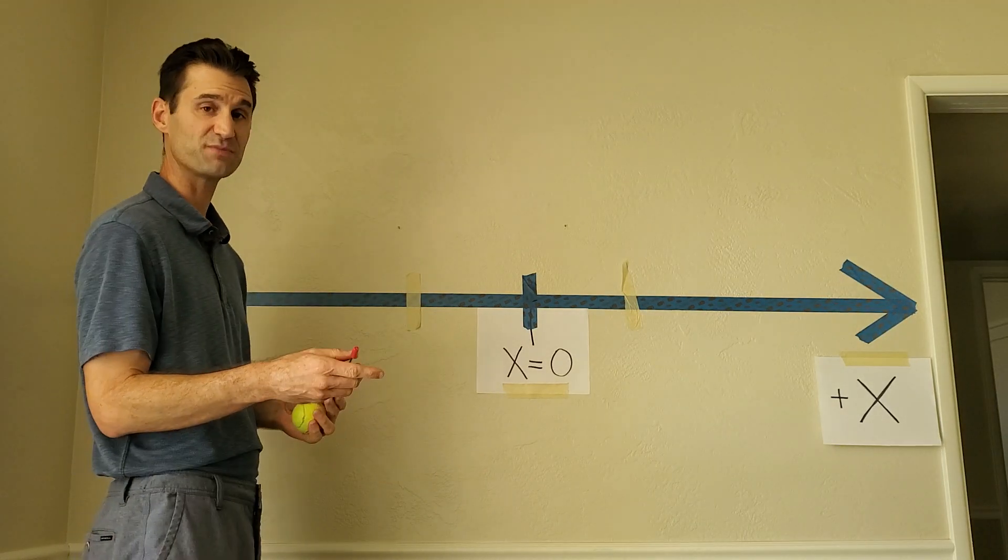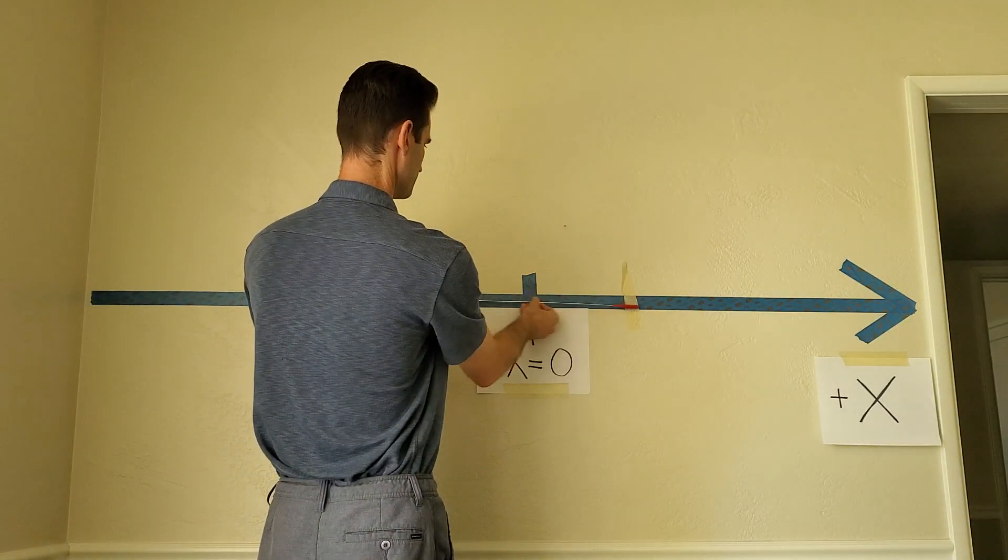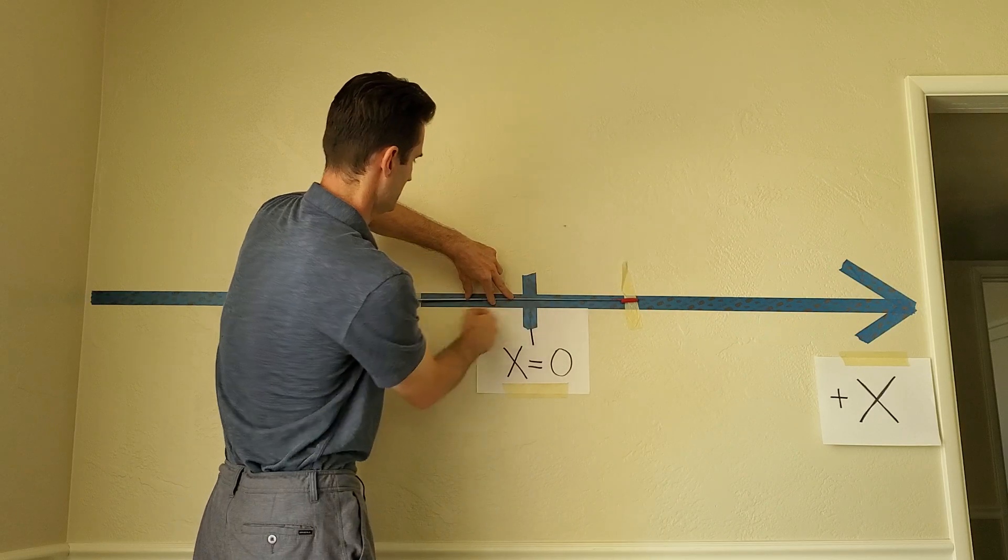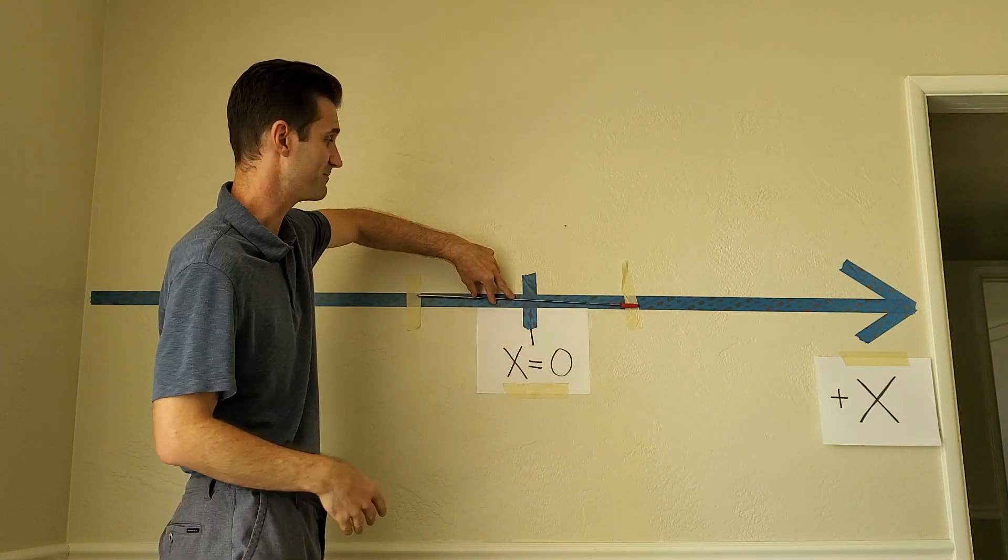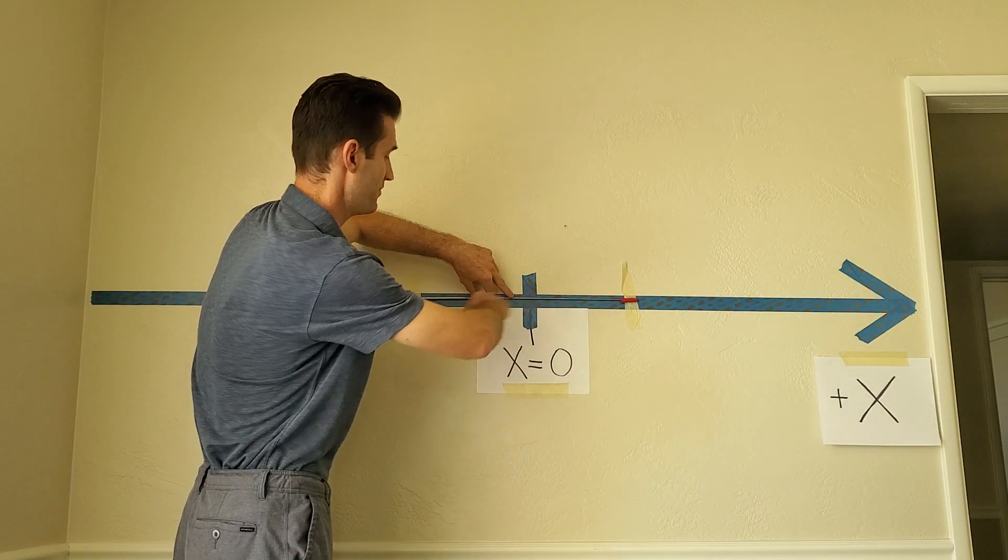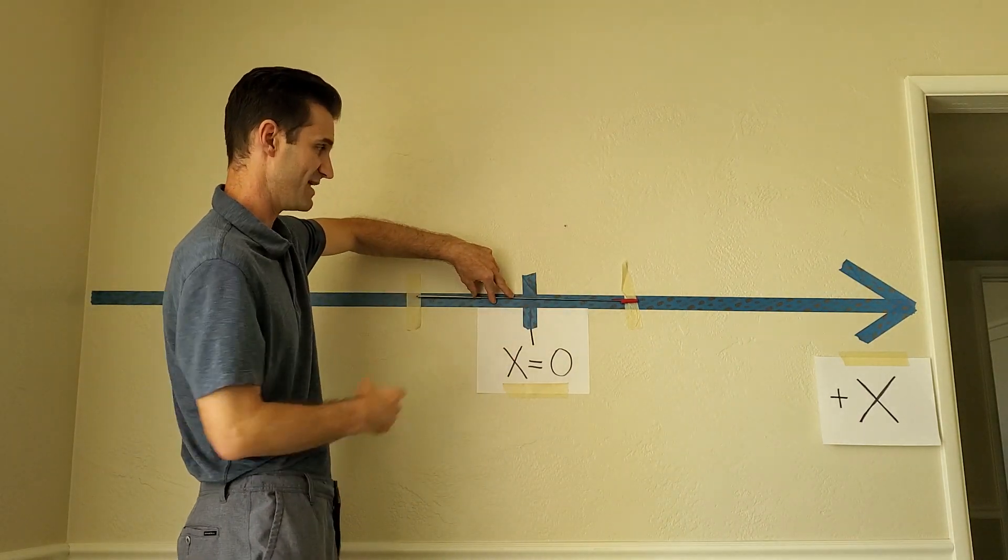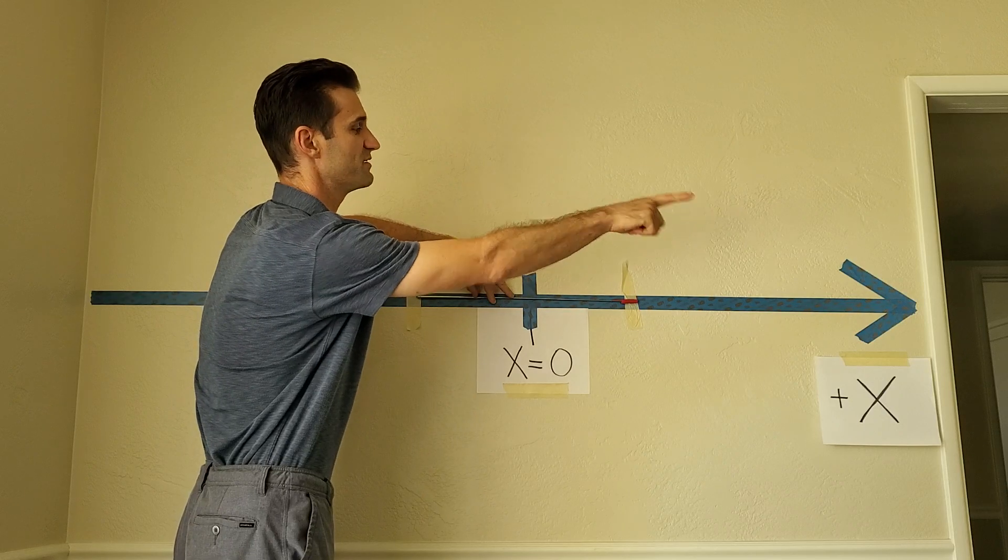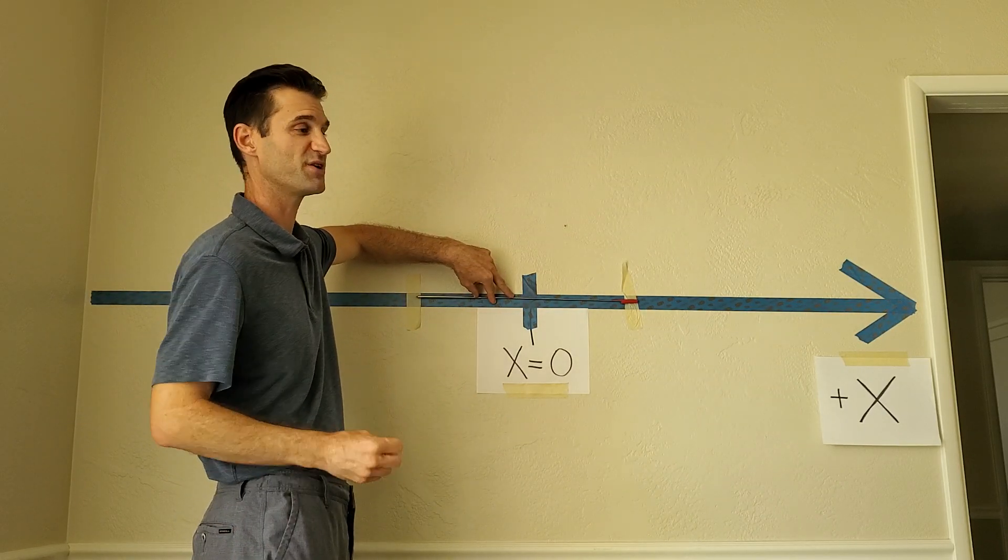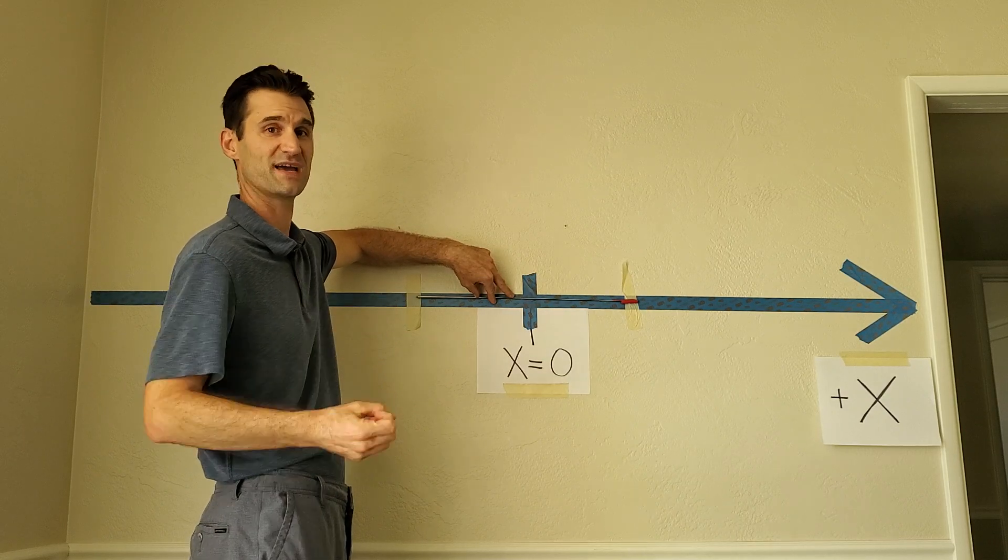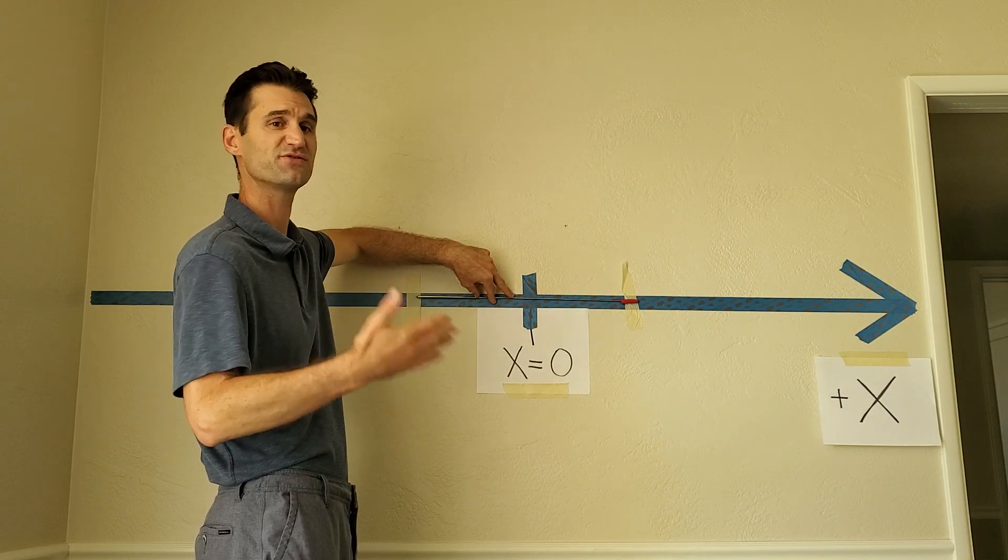So in this case, the displacement vector looks like this. The length of the vector describes the distance in meters, per se, from the initial spot to the final spot. And the direction means that this displacement moved in the positive direction. So this is a positive displacement. We use a plus sign in front of that number. Plus so many meters.